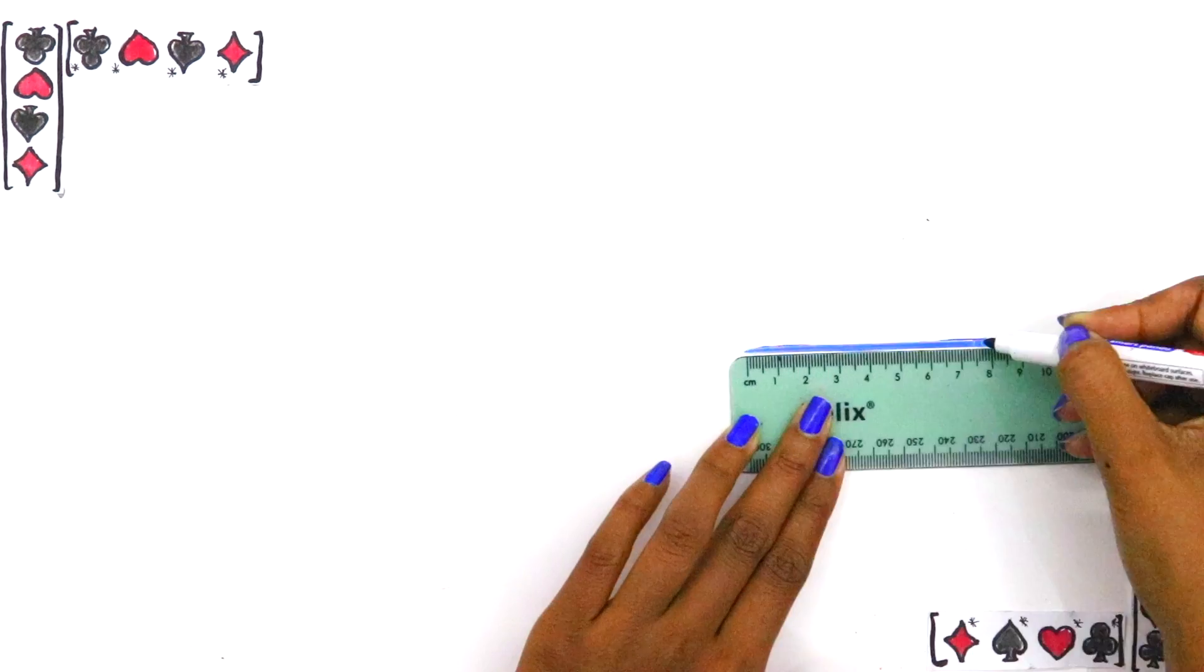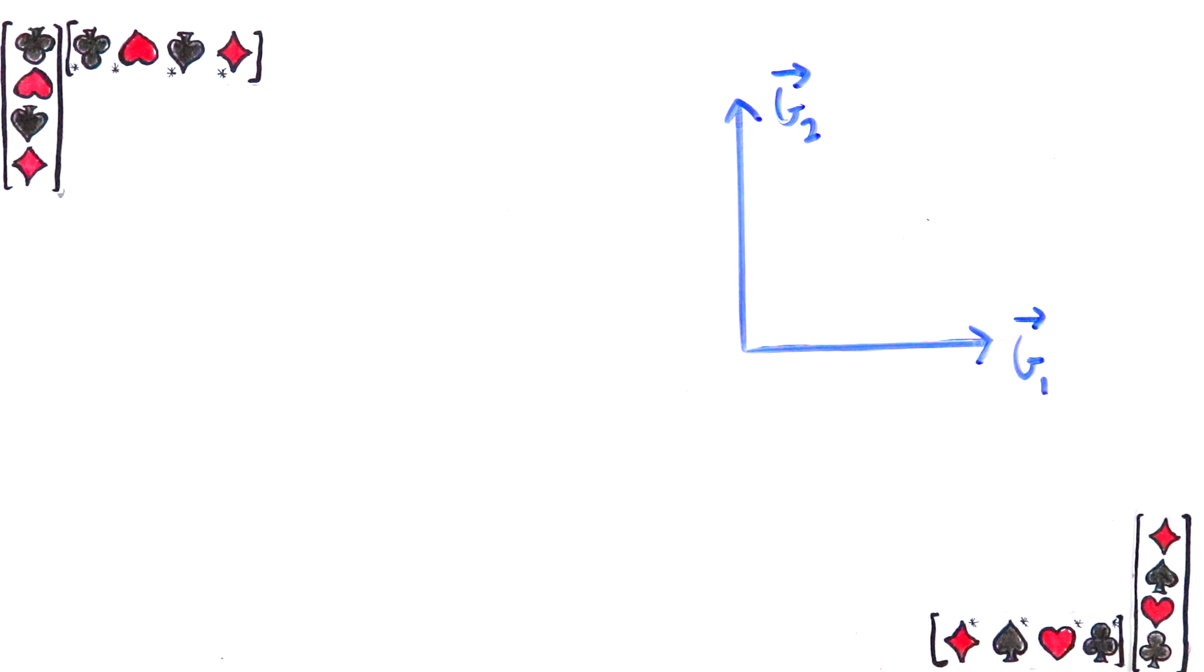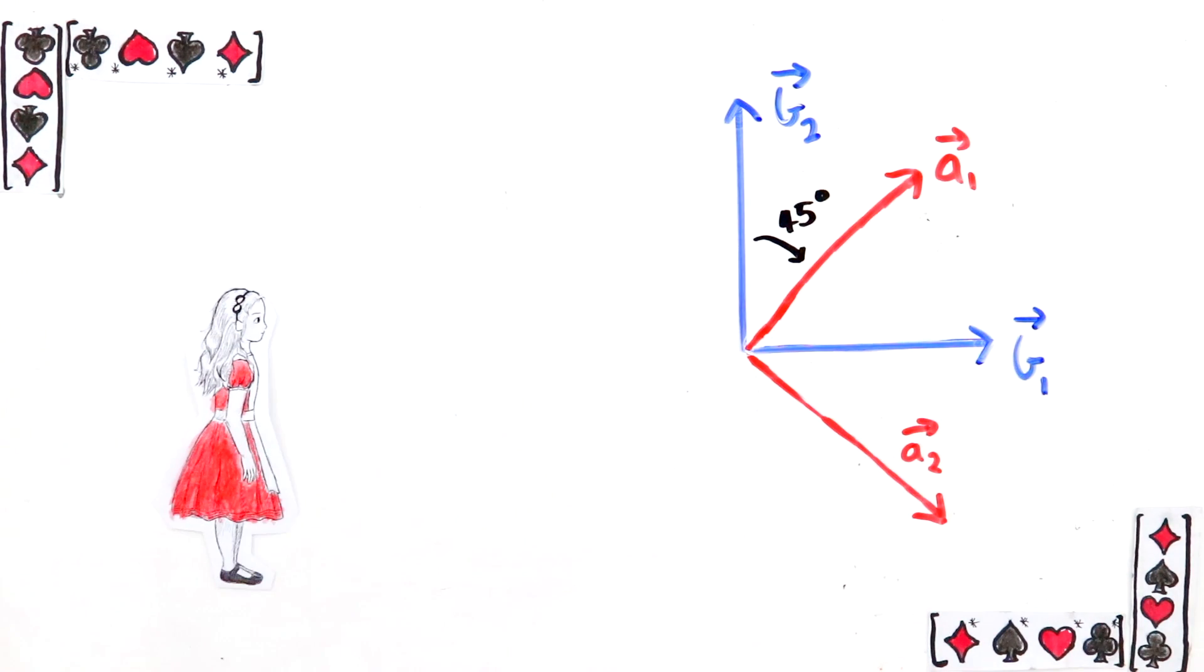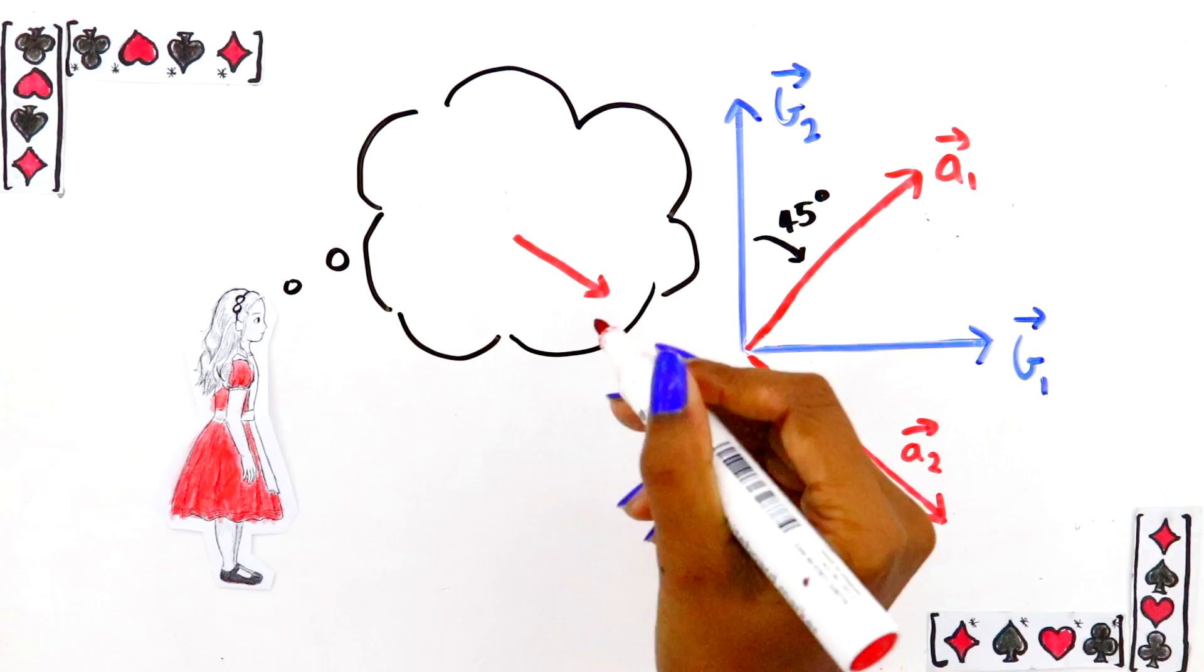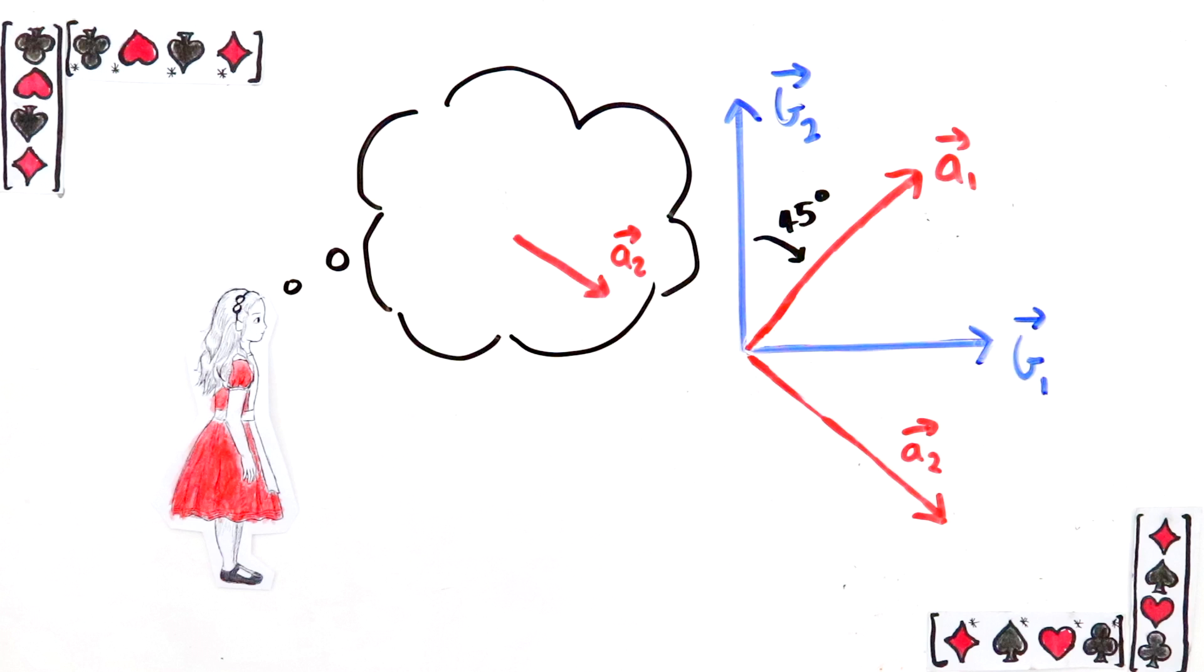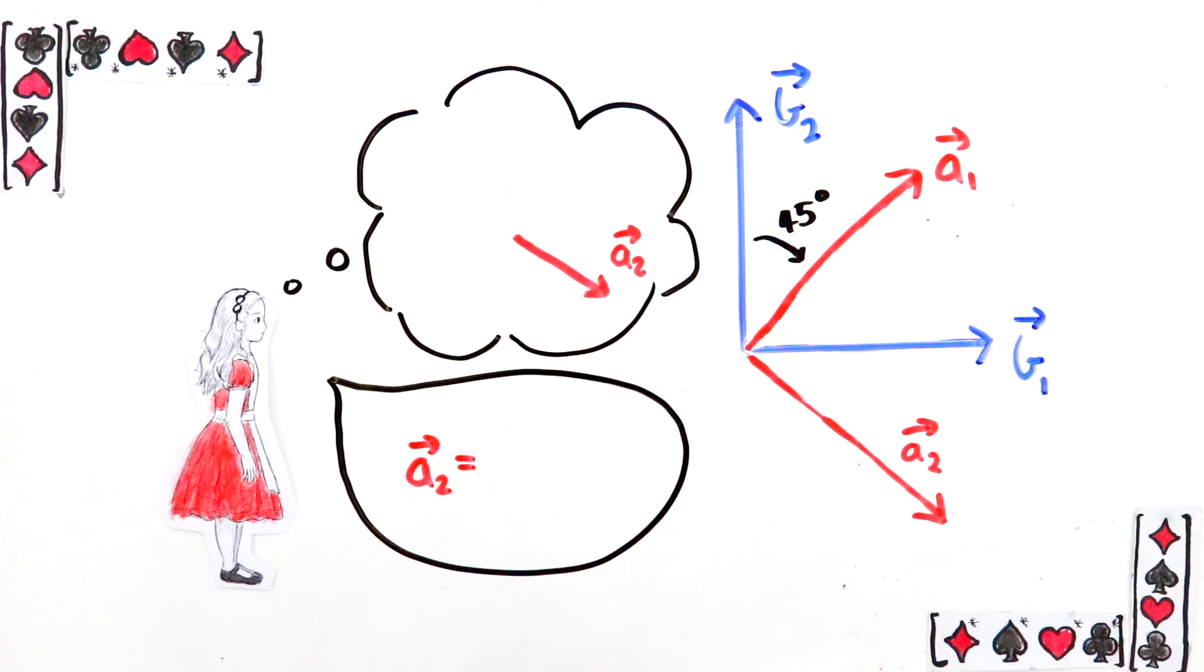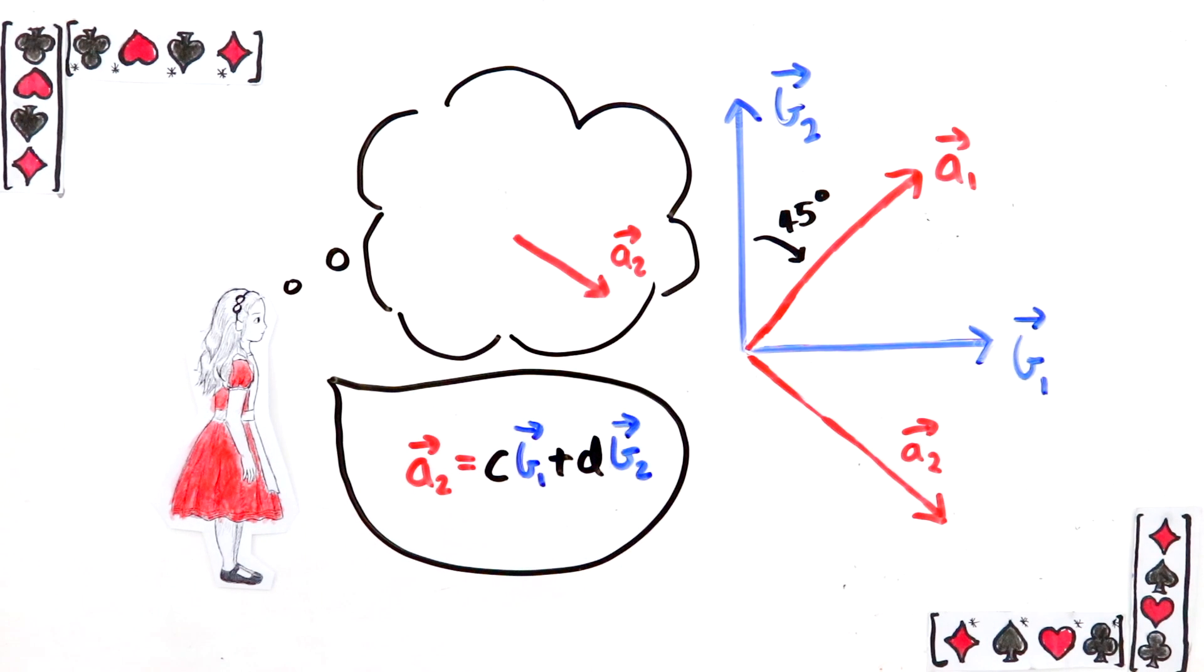Let's see how to do this in a simple example first. Pretend that Bob's basis is this one and Alice's basis is exactly the same but rotated by 45 degrees. Say the vector that Alice wants to communicate to Bob is her second basis vector, this one here. She knows exactly what Bob's basis vectors are and she wants to write her vector in his basis. As in, she wants to write that a2 equals something times b1 plus something times b2. What should these numbers be?